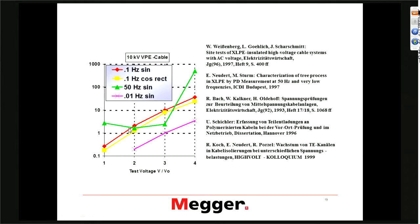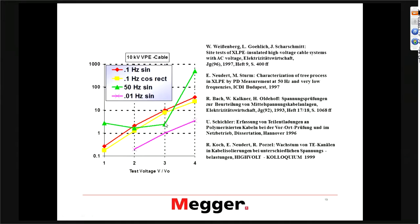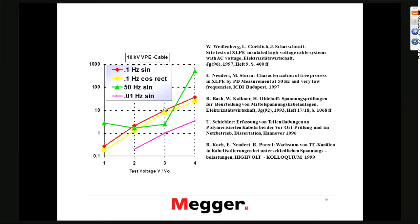This diagram shows the effect of VLF conditions on the growth of electrical trees. The chart shows growth rate on the vertical axis in millimeters per hour versus test voltage level. Looking at the yellow curves — these are 0.1 Hz using sinusoidal and cosine-rectangular angular technologies — at roughly 3 per unit you see about 10 millimeters per hour growth rate on electrical trees. The green curve at 50 or 60 Hz shows maybe one-third of that.